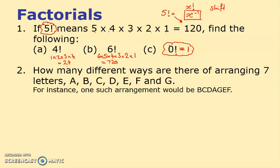How many different ways are there of arranging seven letters A, B, C, D, E, F, G? I've suggested one way - BCDAGEF is one particular arrangement. How could you do this? You certainly wouldn't want to list them all.